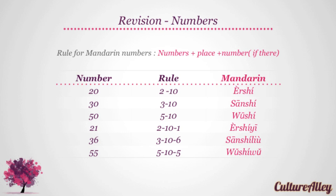21 breaks up to two, ten, and one, translating to er shi yi. While 36, or three, ten, and six, becomes san shi liu. Lastly, 55 is five, ten, and five, becoming wu shi wu.